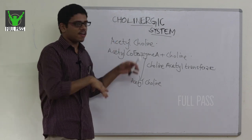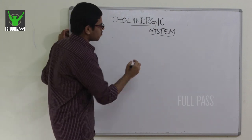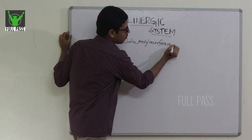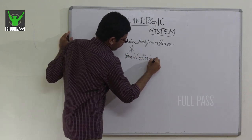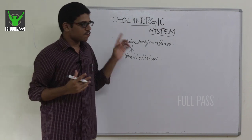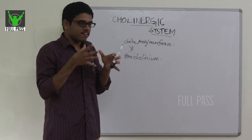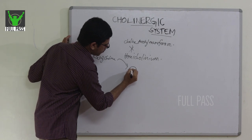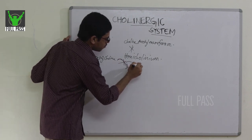Two important things to remember: first, the enzyme choline acetyltransferase is responsible for the formation of acetylcholine, and it is inhibited by the compound hemicholinium, which blocks acetylcholine formation and thereby prevents signal transduction. Second, the transfer of acetylcholine into synaptic vesicles is blocked by another compound called vesamicol.